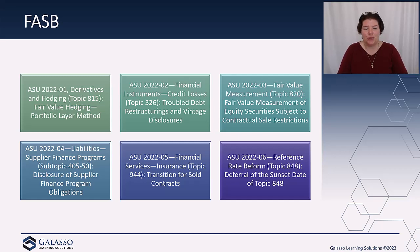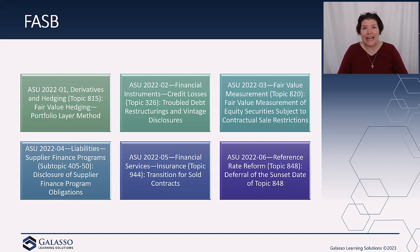ASU 2022-05 is transition guidance for insurance contracts — specifically long duration contracts — that was actually issued back in 2018 and has been delayed. One of the things they're doing is if you have actually sold or disposed of a contract, you don't have to do the full retrospective. So they give a little bit of a change in the transition guidance there.